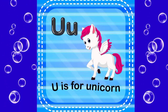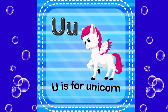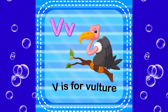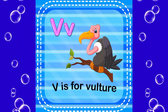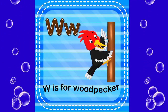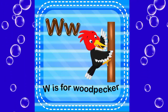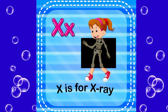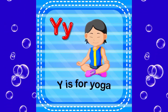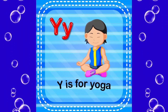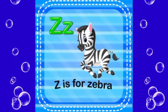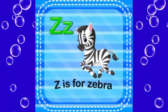U is for unicorn. Z is for wonger. W is for woodpecker. X is for x-ray. Y is for yoga. Z is for zebra.